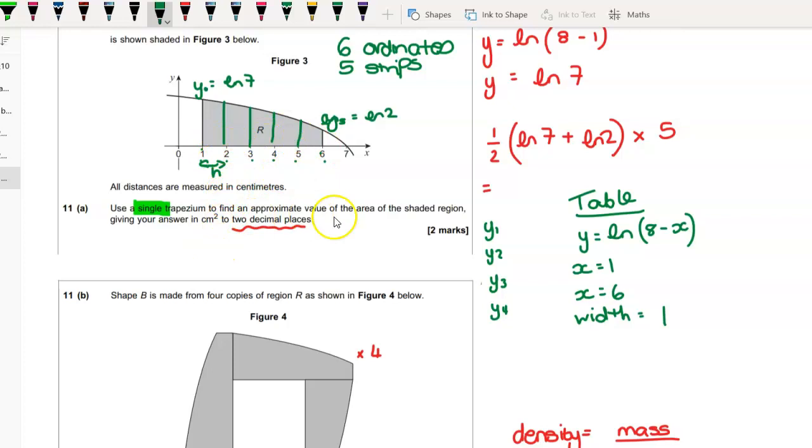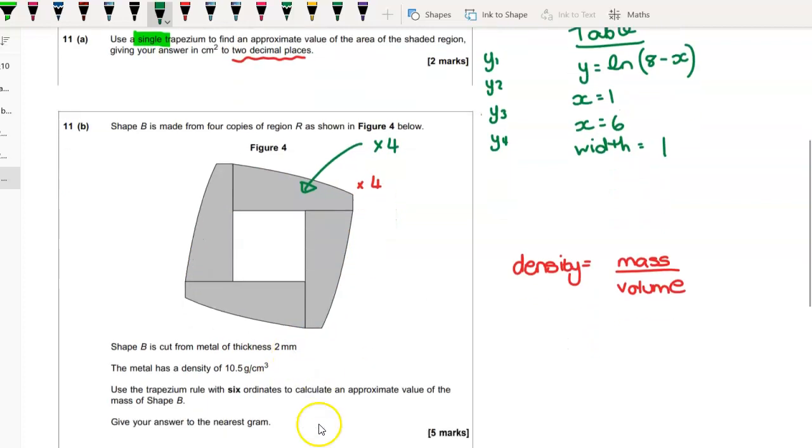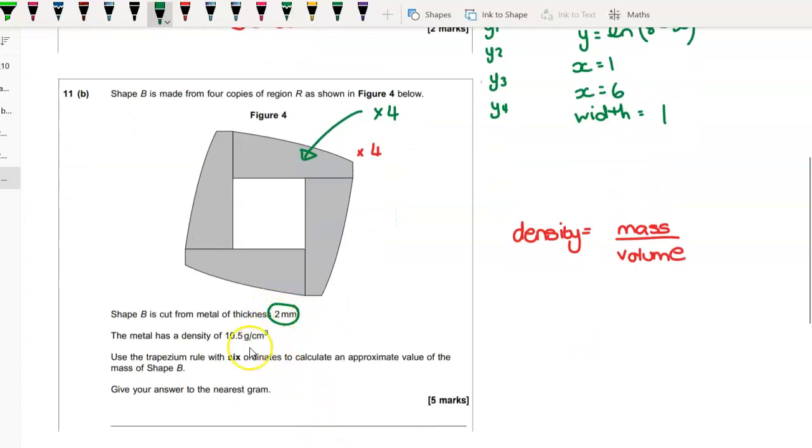Once you've done all that, you times it by four and that gives you your surface area of this whole shape, not just one of them. And then you're going to times it by two millimeters, but you're going to be careful here.